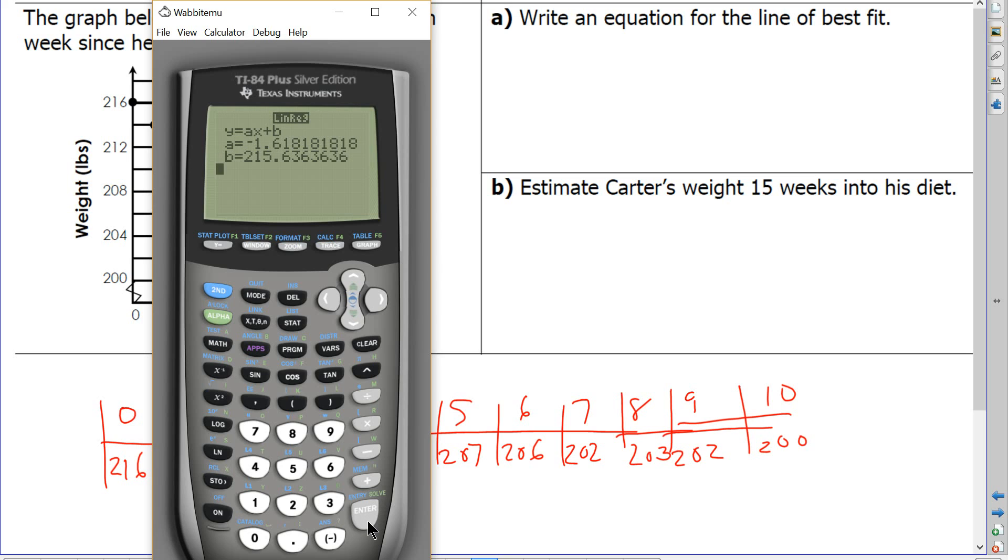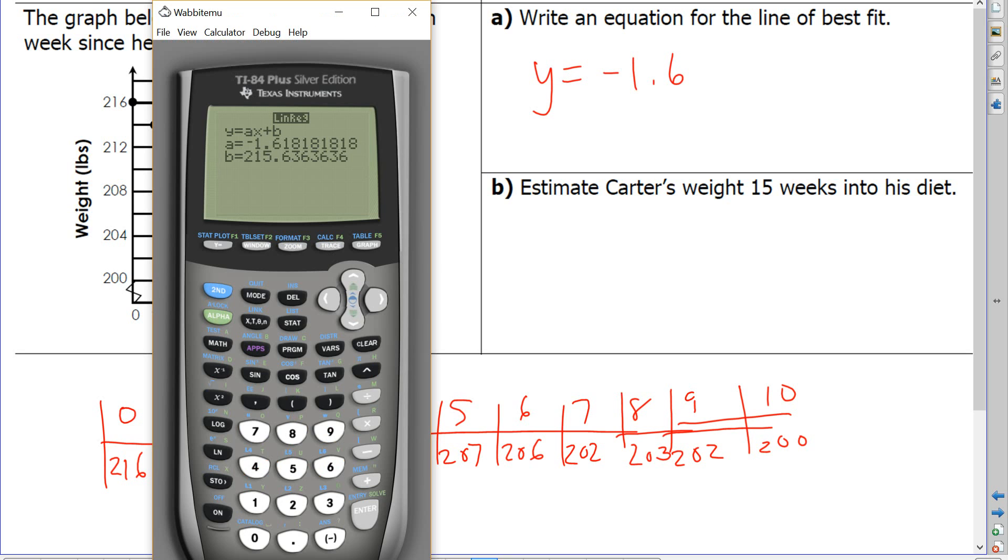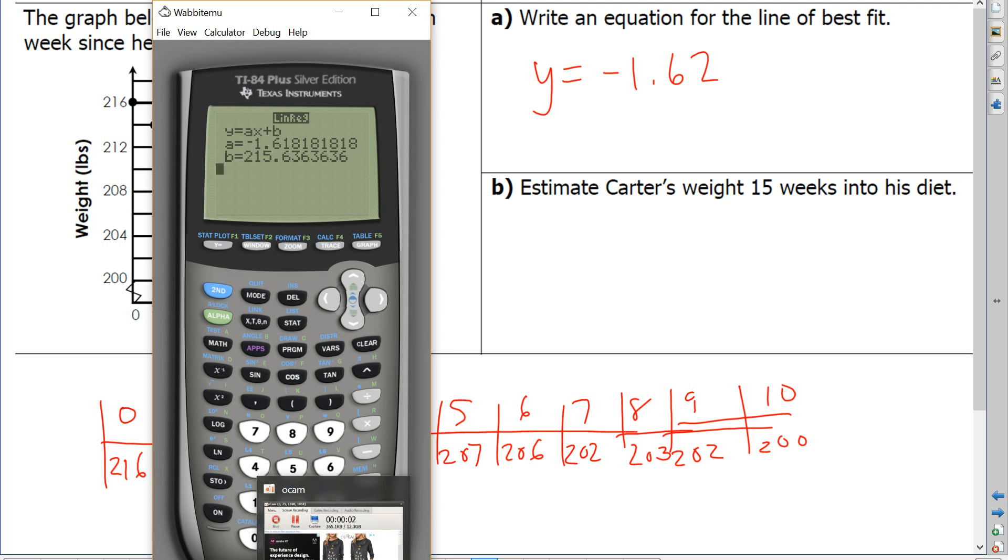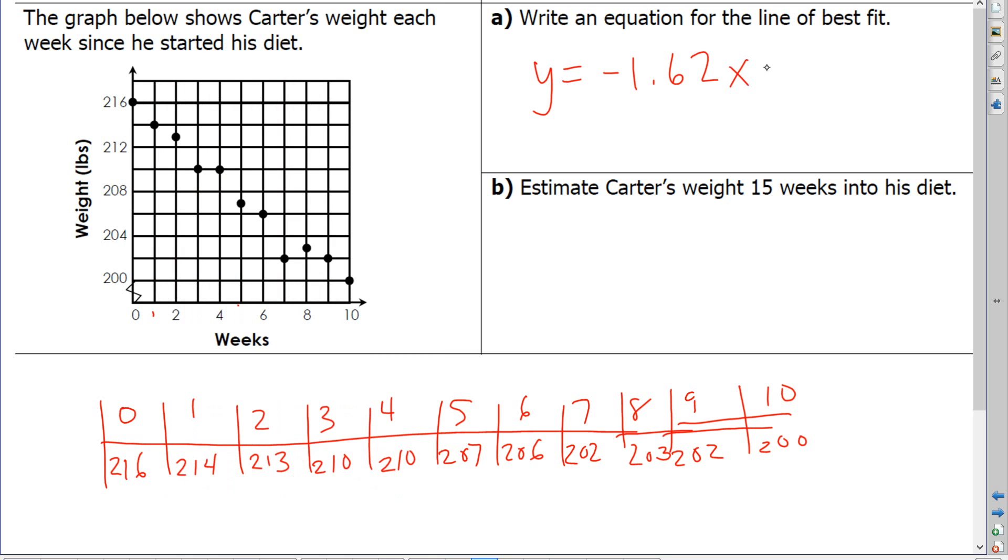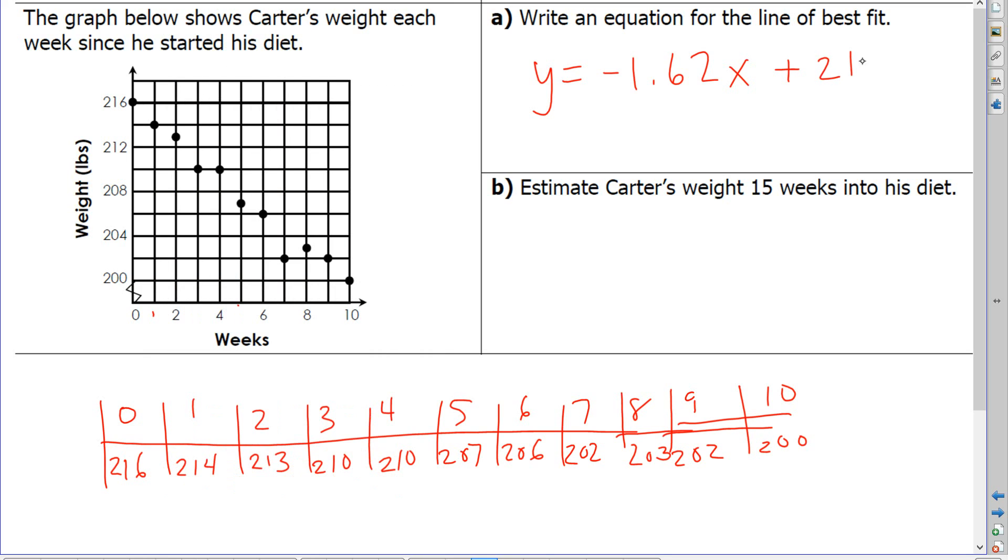Alright. Y equals negative 1.618. So Y equals negative 1.618. So I'm going to say negative 1.62. Then I put in X. And then I put plus 215.636. So 215.63.